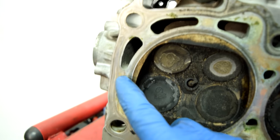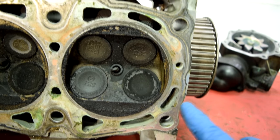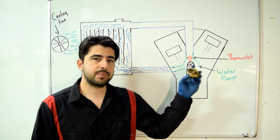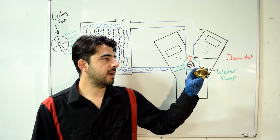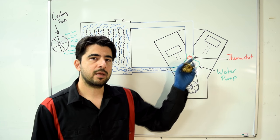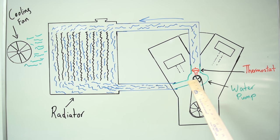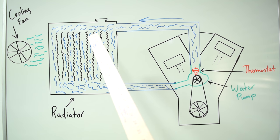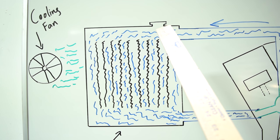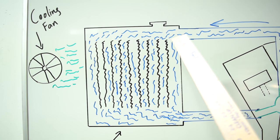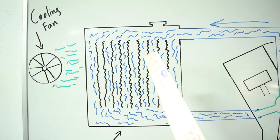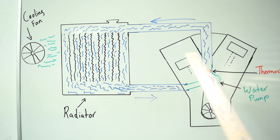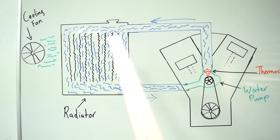You also have coolant passages inside your cylinder head, all around the combustion chambers. The job of your thermostat is to remain closed until the coolant inside your engine reaches the preset temperature, then this valve opens and allows circulation throughout your cooling system. Once the thermostat opens, your water pump pumps coolant through the upper radiator hose into your radiator. Inside the radiator, coolant is cooled by exchanging heat through the fins, then it goes back to the engine and keeps it cool, and the whole cycle repeats itself.